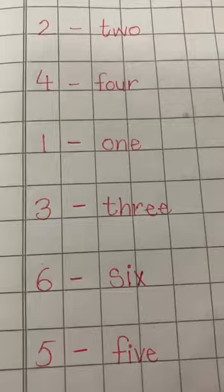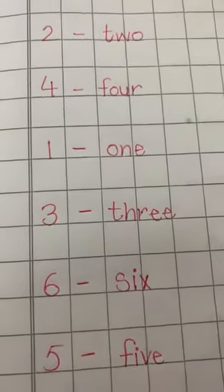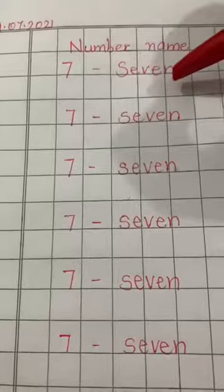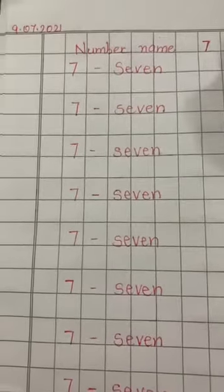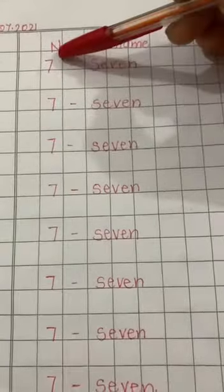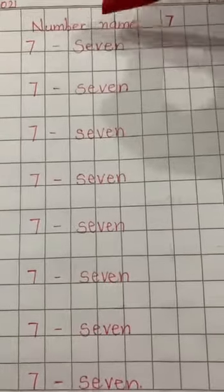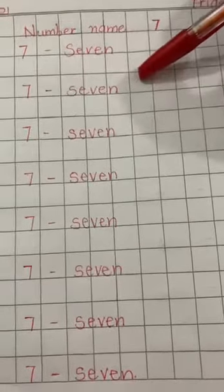Five: F-I-V-E. Now today's work: write and learn the spelling of number name seven. Seven: S-E-V-E-N.